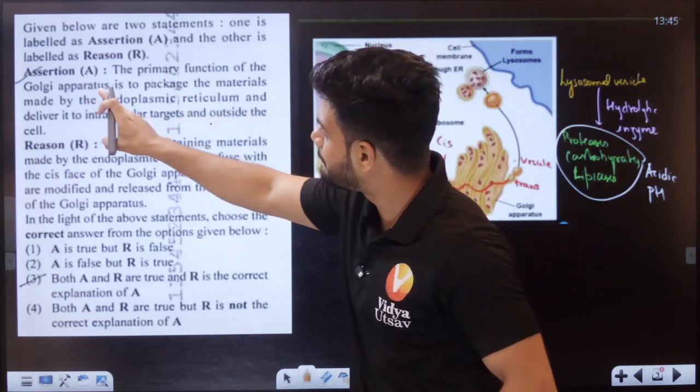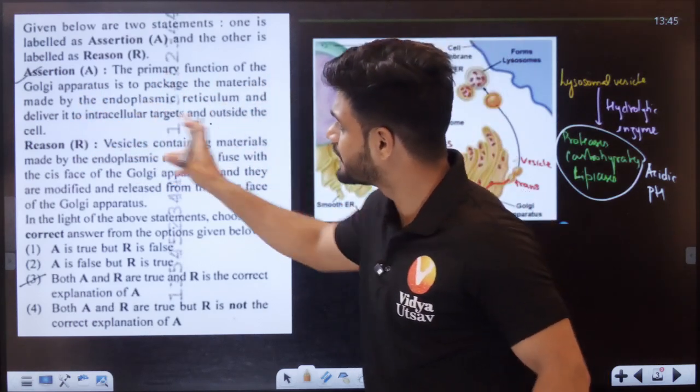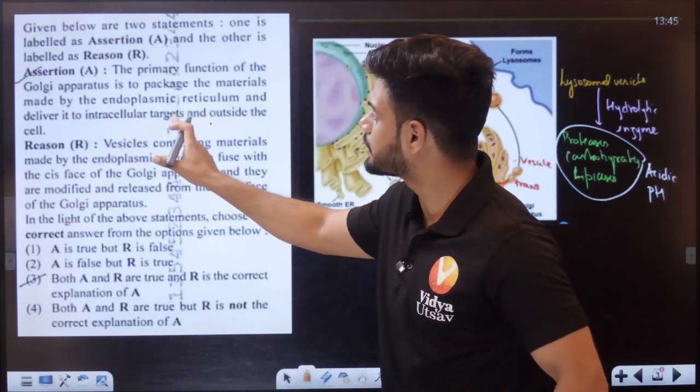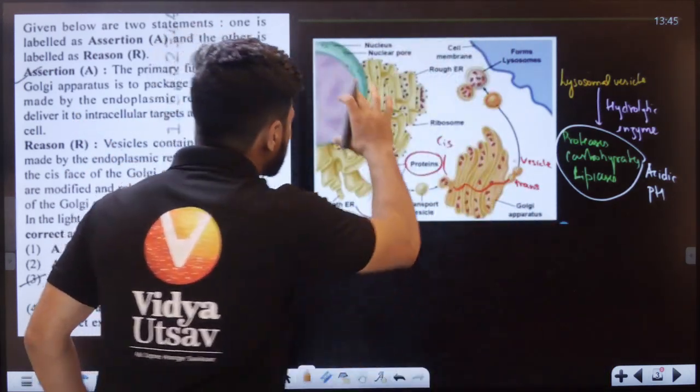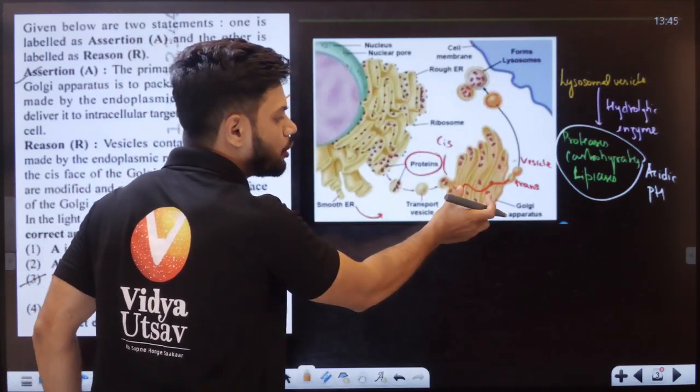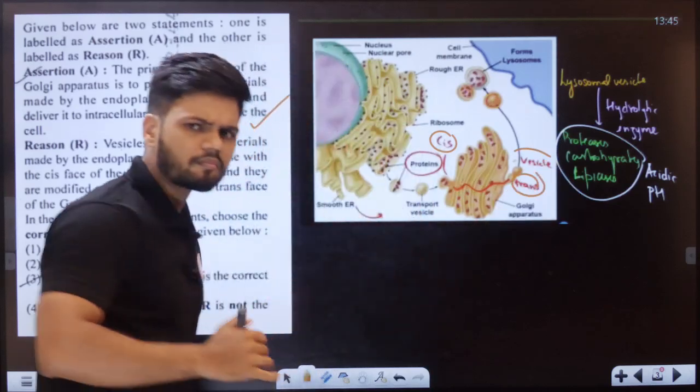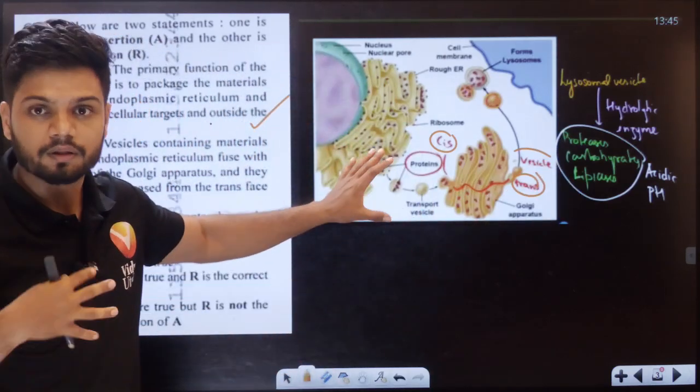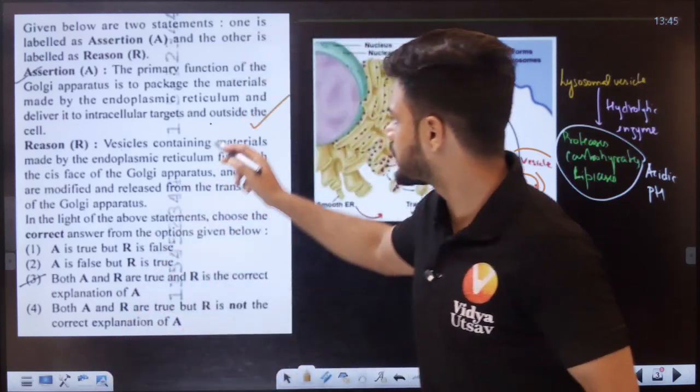Now see students here, the first question is fairly simple. There should be no confusion here. The primary function of the Golgi apparatus is to package the materials made by the endoplasmic reticulum and deliver it to the intracellular targets and outside the cell. All of you know, right, there is something called the nucleus, ER here. Products are packaging is in by Golgi.